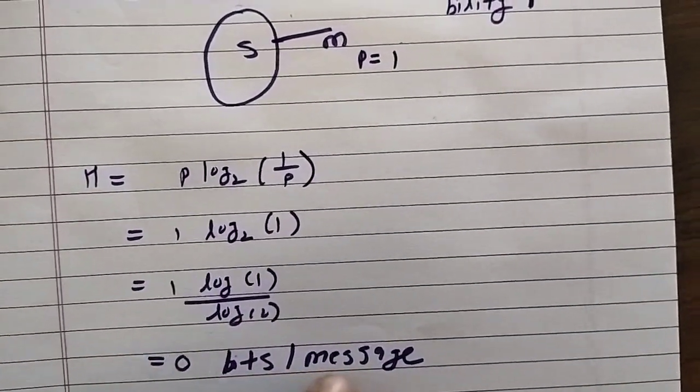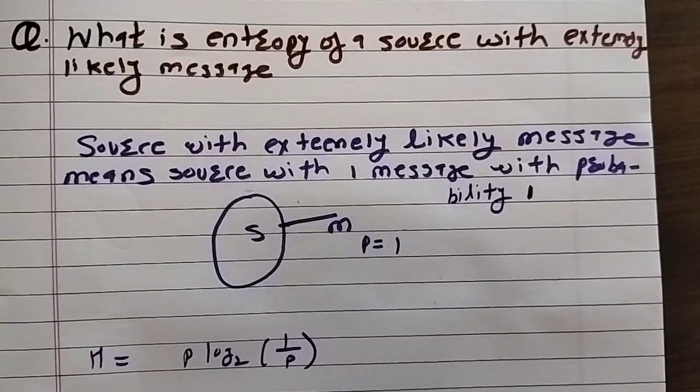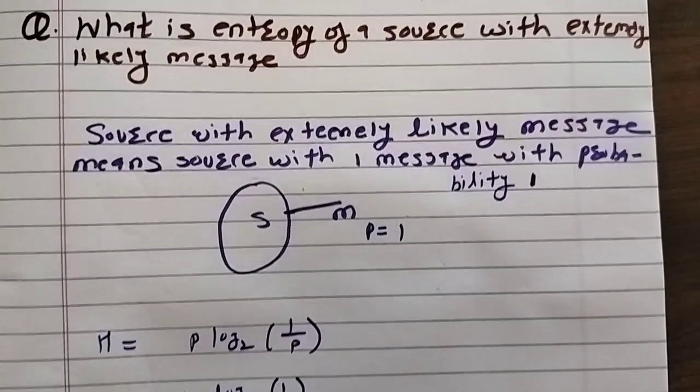So, entropy is 0 bits per message. Entropy of a source with extremely likely message is 0.